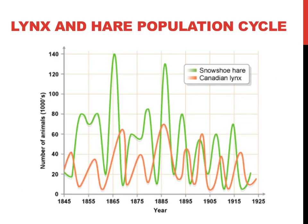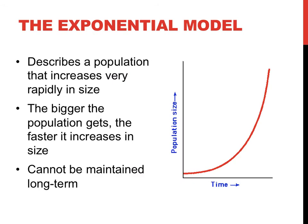The graphic shown on this slide depicts the density-dependent form of regulation described just a moment ago. The x-axis shows a wide time range, while the y-axis measures the number of snowshoe hare and lynx in a population in thousands. The populations visibly fluctuate up and down. The red arrow points to a time when the population of snowshoe hare was very high. The population of lynx, indicated by the blue arrow, increased dramatically a couple short years later. The number of hare was an example of a density-dependent factor regulating the population size of the lynx.